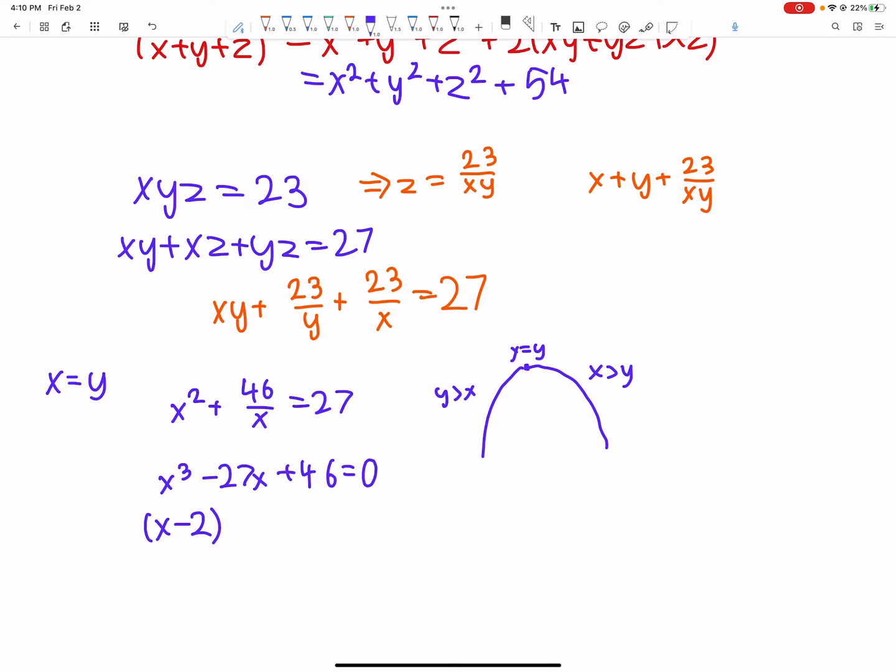And, we plug in 2, we get x minus 2. And then, we also have to multiply by another quadratic, which I believe is x squared plus 2x plus 23, something like this. Yeah, this should be right. Yeah.